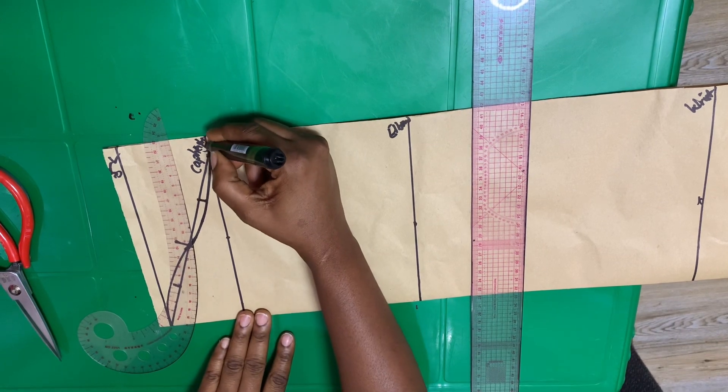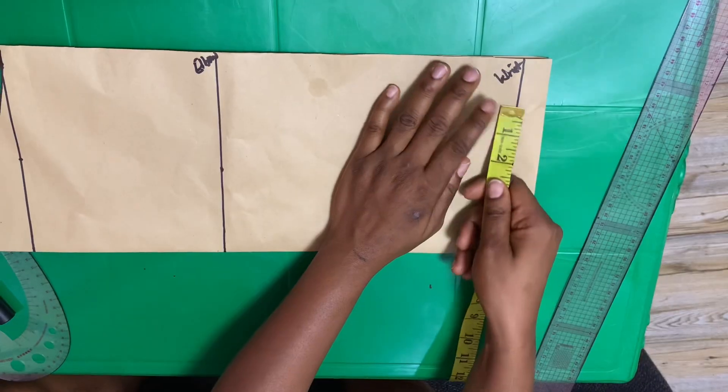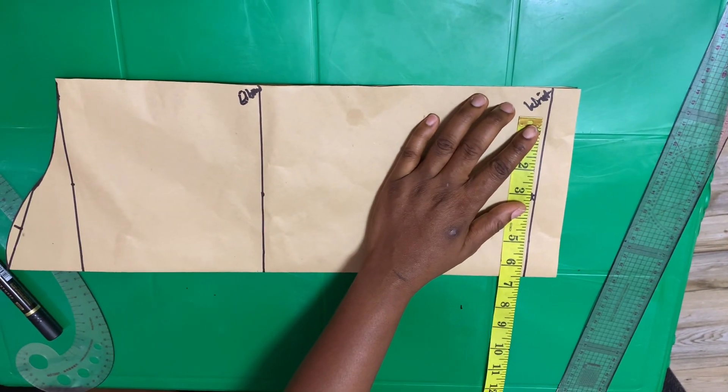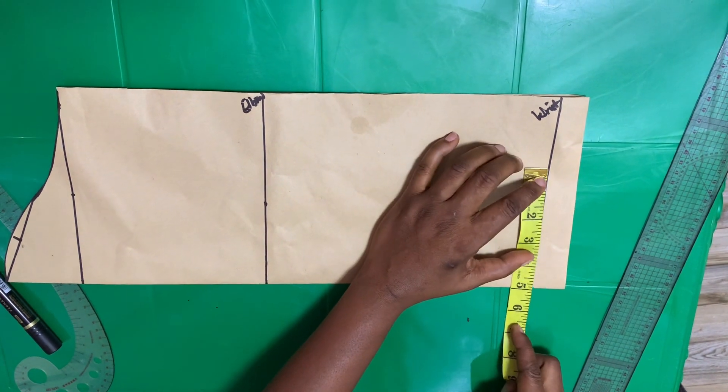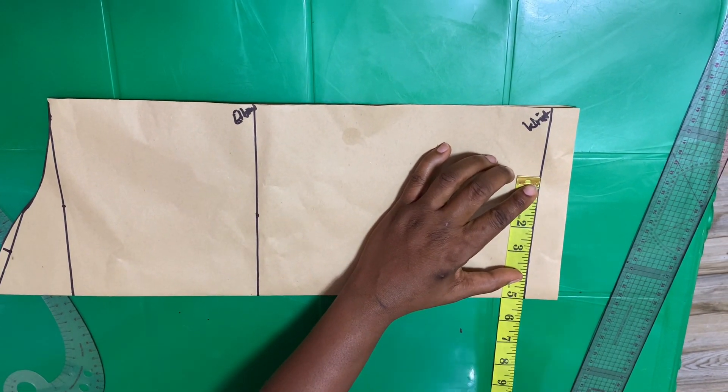After I shape that, I will go over to my elbow and divide my elbow measurement by two and my wrist measurement by two. Let's start from the wrist first. The wrist measurement is 10, so divided by two is 5 inches.